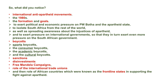It's very important that you then move on to discussing the various forms of anti-apartheid boycotts, such as the sports boycotts, the consumer boycotts, the academic boycotts, and the cultural boycotts. Remember to also give examples of each boycott, and to emphasize that the purpose of these boycotts were to exert political and economic pressure on PW Botha and the apartheid state, to isolate South Africa from the rest of the world, as well as spreading awareness about the injustices of apartheid, and to exert pressure on international governments so that they in turn exert even more pressure on the South African government.